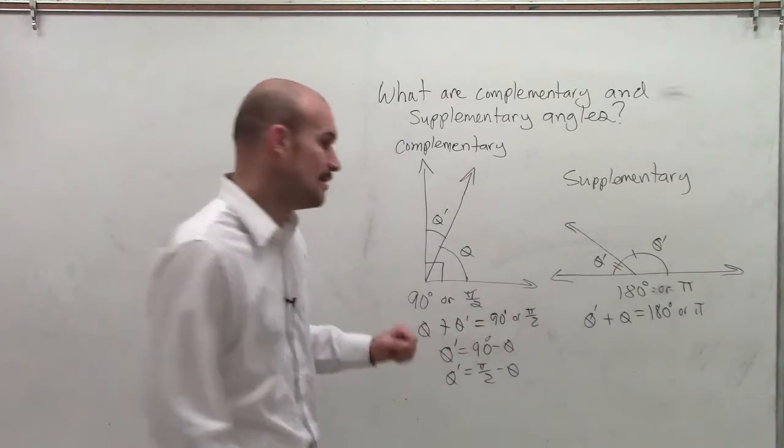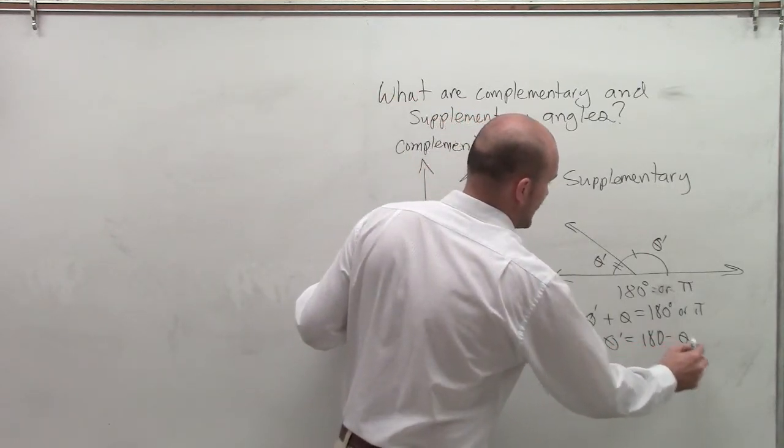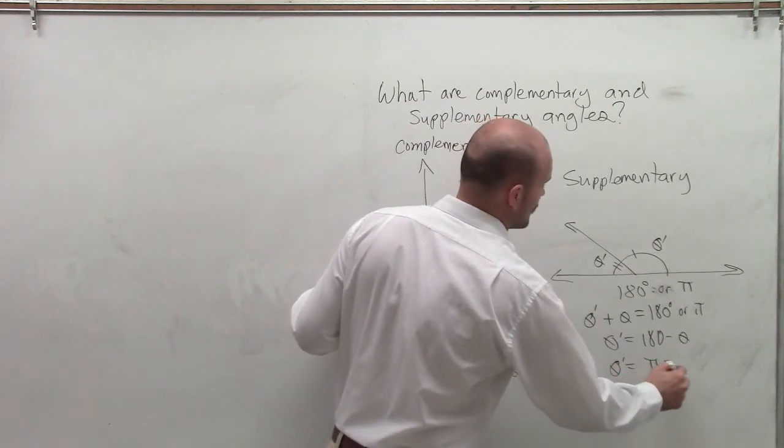And very similar for supplementary angles, we can create two equations. Theta prime equals 180 minus theta, or theta prime equals pi minus theta.